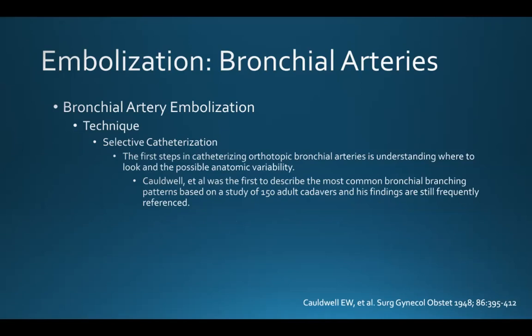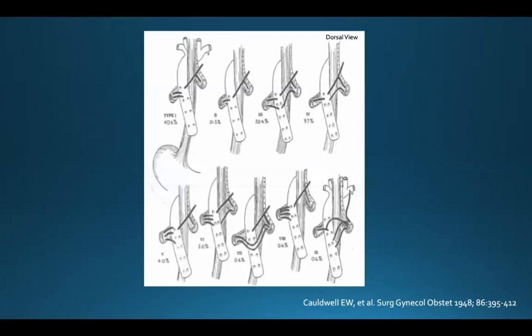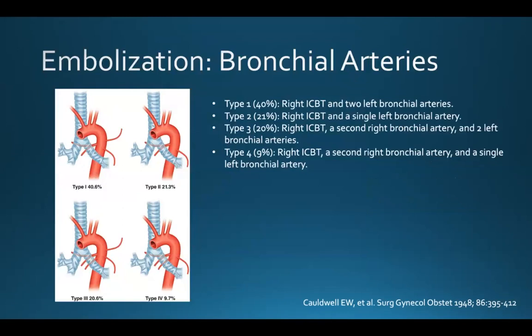In 1948, Caldwell was the first to describe the most common bronchial branching patterns based on a study of 150 adult cadavers, and his findings are still frequently referenced today. There are four common types plus five additional types he identified. Type 1, occurring in 40% of individuals, is a common trunk on the right between intercostal and bronchial arteries and then two left bronchial arteries. Type 2, occurring in 21%, is a common trunk on the right and a single left bronchial artery. Type 3, occurring in about 20%, is a right common trunk, a second right bronchial artery, and two left bronchial arteries. Type 4, occurring in about 9%, is a right common trunk, a second right bronchial artery, and a single left bronchial artery.